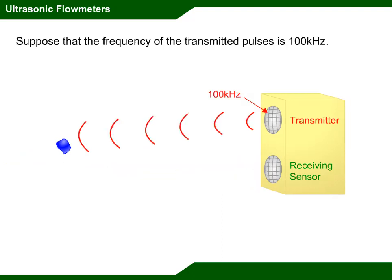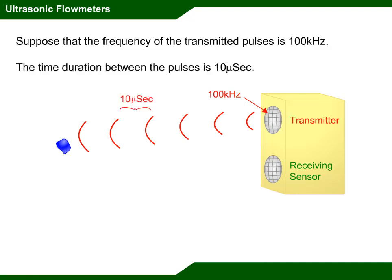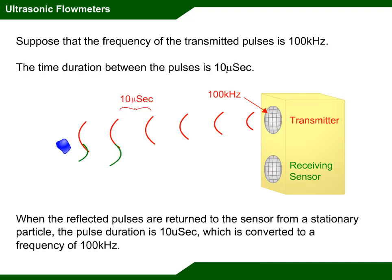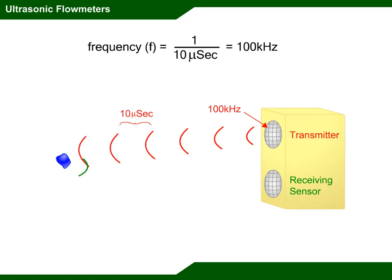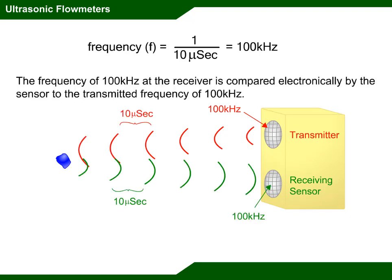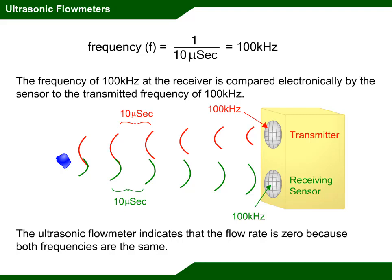Suppose that the frequency of the transmitted pulses is 100 kilohertz. The time duration between the pulses is 10 microseconds. When the reflected pulses are returned to the sensor from a stationary particle, the pulse duration is 10 microseconds, which is converted to a frequency of 100 kilohertz. The frequency of 100 kilohertz at the receiver is compared electronically to the transmitted frequency of 100 kilohertz. The ultrasonic flow meter indicates that the flow rate is zero because both frequencies are the same.